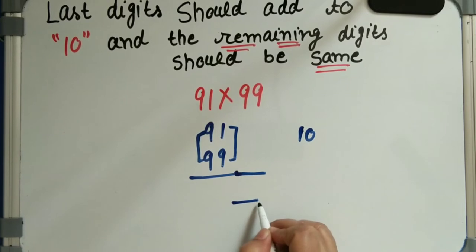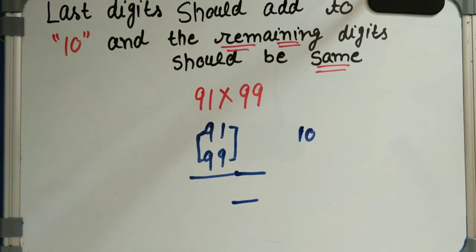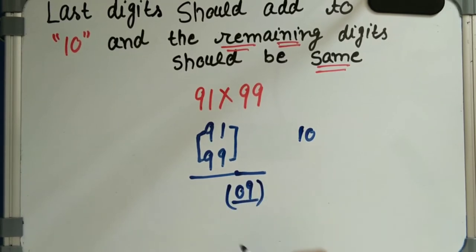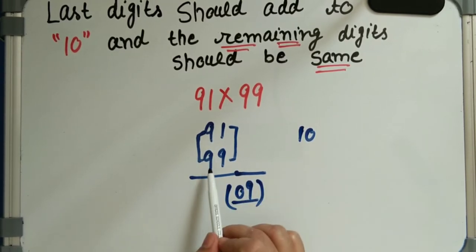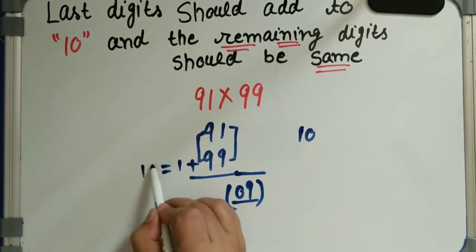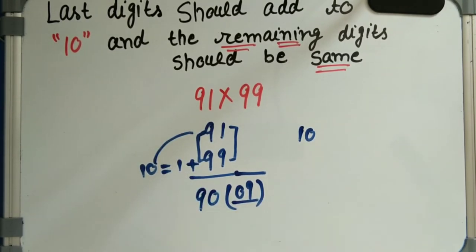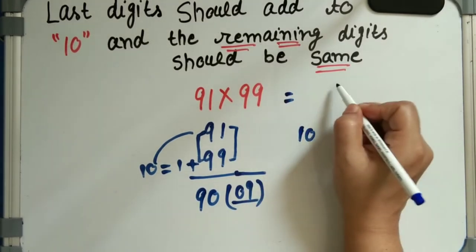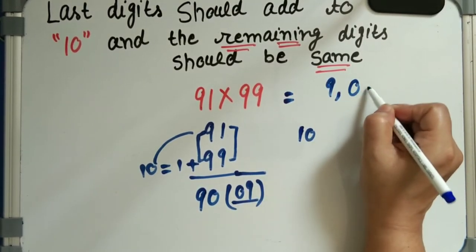But notice: whatever digit you write here should not be a single digit — it must be two digits. So we apply a zero here and write 09. Next, the remaining digits are both 9, so we add 1 to get 10. That means 10 into 9 equals 90. So the answer is 9009.